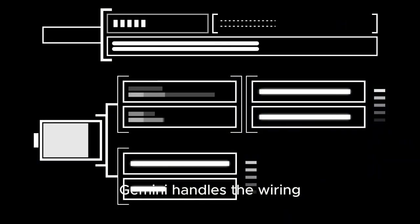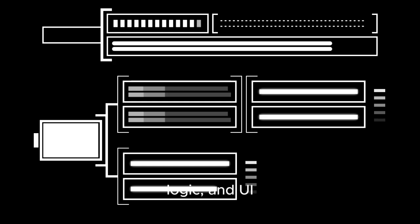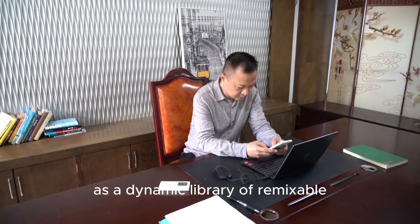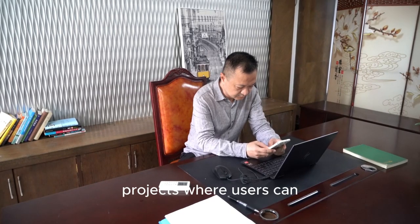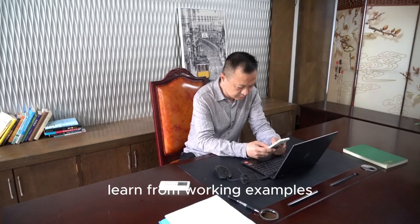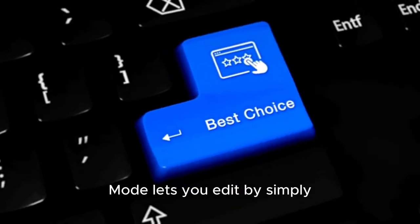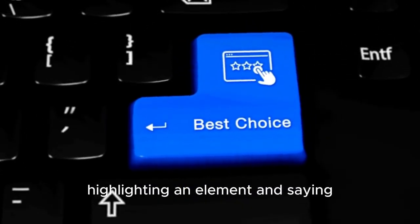Behind the scenes, Gemini handles the wiring, logic, and UI, turning app creation into a smooth, visual experience. The redesigned app gallery now serves as a dynamic library of remixable projects where users can preview, fork, and learn from working examples. While annotation mode lets you edit by simply highlighting an element and saying what to change, like make this button blue or animate this image from the left.